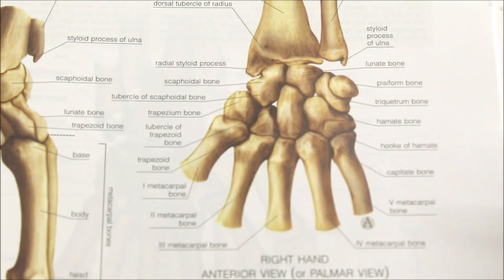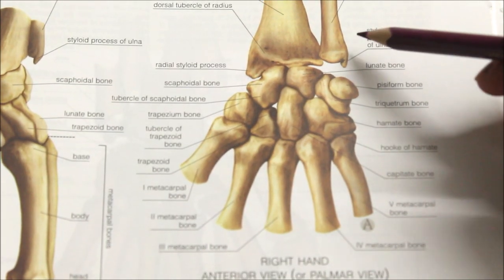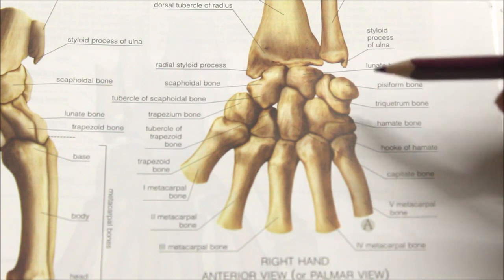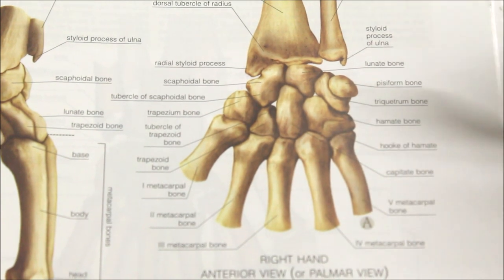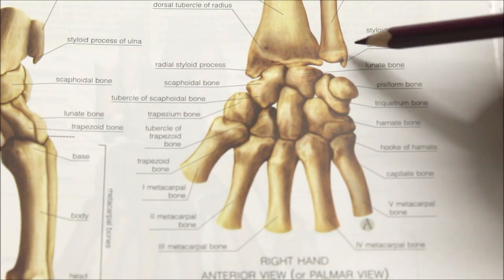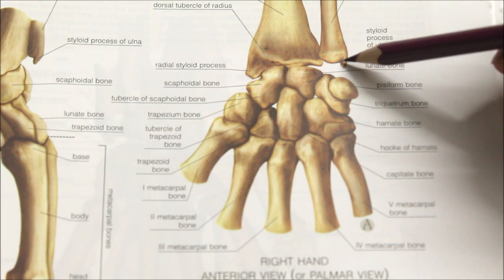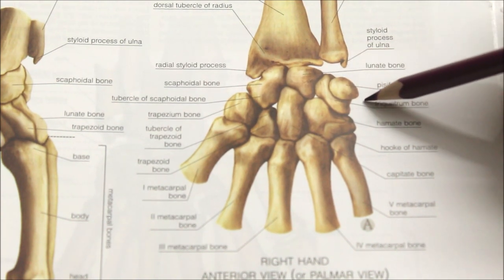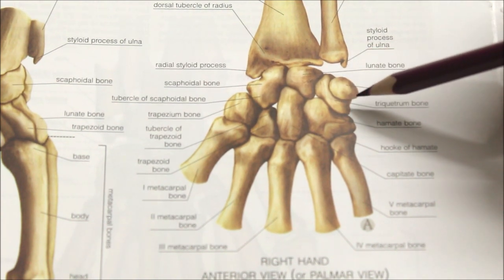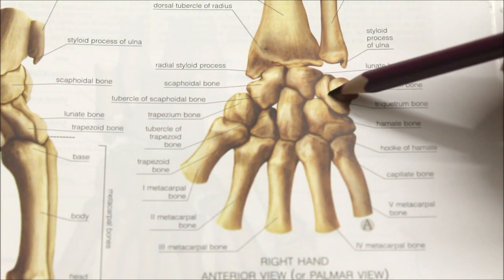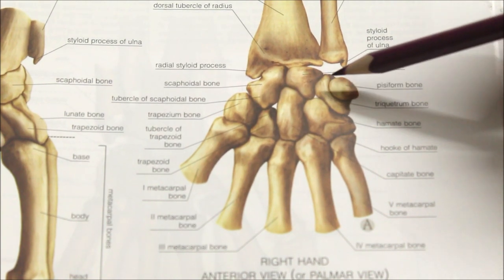Secondly, we have the palmar ulnocarpal ligament. It begins from the base of the styloid process and runs downwards and laterally, and is attached to the lunate and triquetral bones.